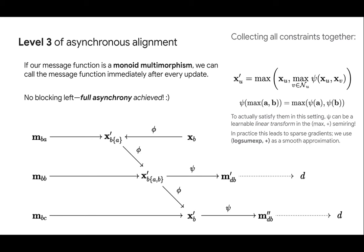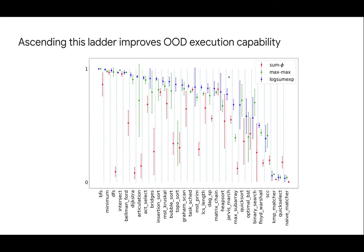However, we haven't been able to practically train this exact architecture because a distance matrix has quadratically many parameters, and with max aggregation only one value per row receives gradients, which is a problem for learnability. As a quick fix, we use the log-sum-exp semiring, which is a smooth approximation to max-plus. With these constraints together, you have full asynchrony: the same max-max GNN equation but with psi as a tropical multilinear function, so you can send messages whenever you want with nothing blocking anywhere. Evaluating on CLRS with test sizes four times larger than training sizes, you can see that red is level one, green is level two, and blue is level three — the log-sum-exp approximation yields the most competitive model overall with generally smaller confidence intervals.